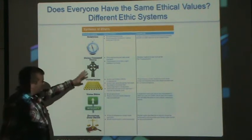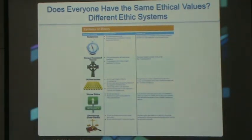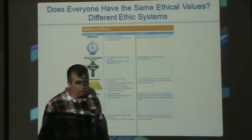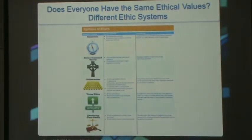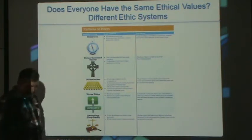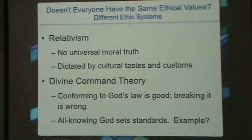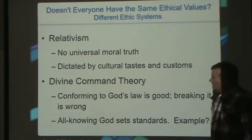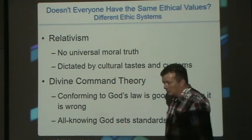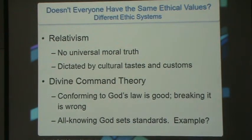Does everyone have the same ethical system? No — everyone has different theories about what is ethical. We all try to behave ethically, especially when using computer systems and networks, but we all have different definitions. The main theories are: relativism, divine command theory, utilitarianism, virtue ethics, and duty-based ethics. Relativism holds there is no universal moral truth — it's dictated by cultural tastes and customs. Divine command theory is conforming to God's law; following it is good, not following it is bad, with the Ten Commandments as an example.